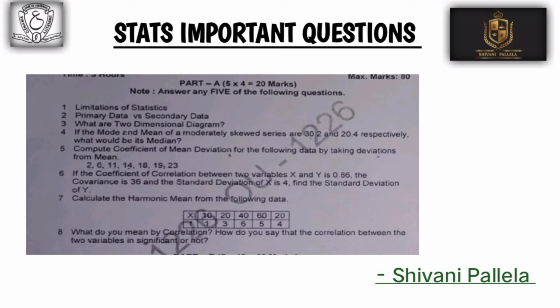In Part A, we have 8 questions and 5 questions. In the previous question paper format, Part A has 4 marks per question. In Part B, we have one paper with internal choices.